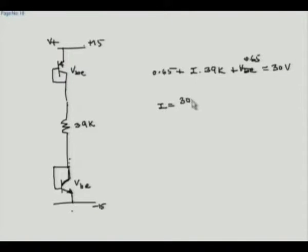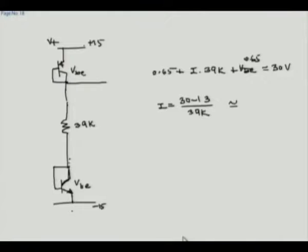That is the potential difference between these two points. Now I is the only unknown; this VBE is also 0.65 and together they make about 1.3 volts. Therefore, I equals 30 minus 1.3 divided by 39k, and this is what gave us 739 microamps. So it sets up this voltage, and now this VBE becomes the reference for many other current mirrors.